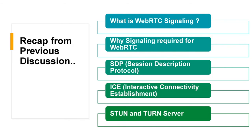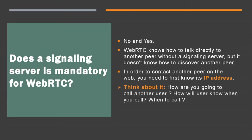Does a signaling server need to be mandatory for WebRTC? The answer is either you can use a signaling server, or you don't require one. WebRTC knows how to talk directly to another peer without a signaling server, but it doesn't know how to discover another peer. In order to contact another peer on the web, you need to first know its IP address.